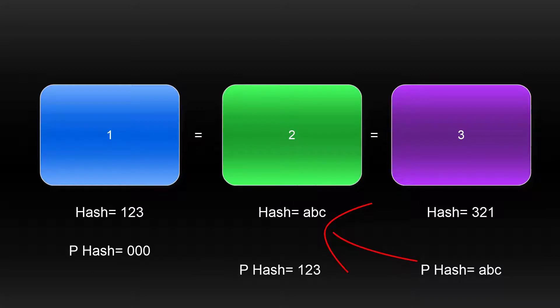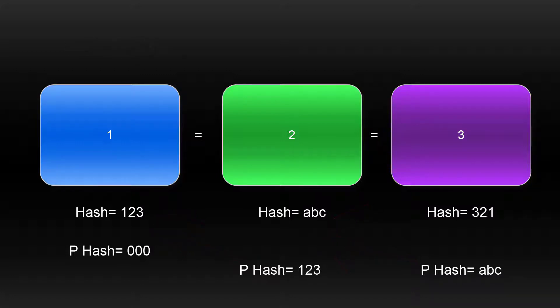Let's say we have three blocks. The third block references the second, and the second references the first. Since the first block has nothing to reference, it's called the genesis block. If the first or second block is tampered with, all blocks further down the chain become invalid — the hash changes for that tampered block, making everything after it invalid, and that's how you can identify where the problem started.